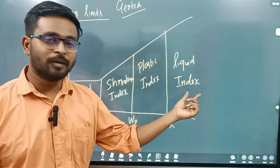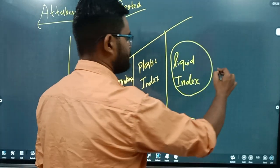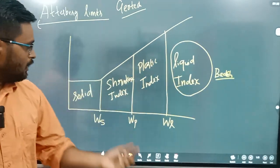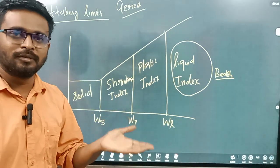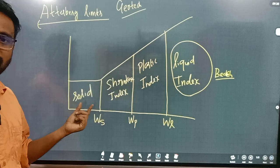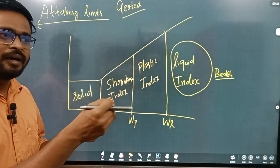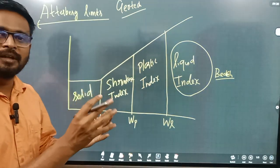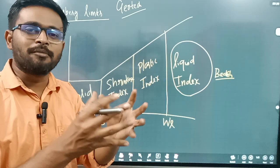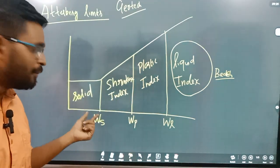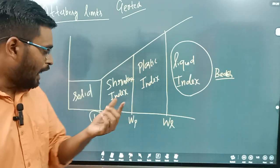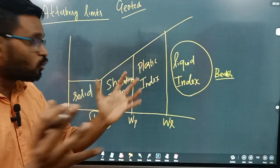That is a liquid index. For example, if you do a beach, you will know that this is a state. If you add a state, if you add water, you can add water, you can add the temperature. So let's add a limit. If you look at the limit, you will remove the soil from the surface — that is the shrinkage index.